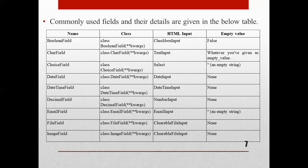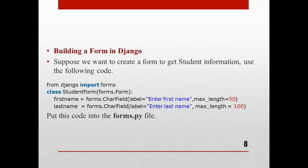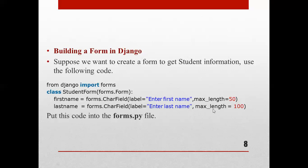Now we will see an example for building a form in Django. Suppose we want to create a form to get student information. We create a forms.py file and write: from django import forms, then class StudentForm(forms.Form). Inside, first_name is set to forms.CharField with label 'Enter first name' and a maximum length, and last_name is set to forms.CharField with label 'Enter last name' and a maximum length.